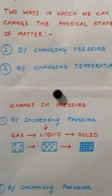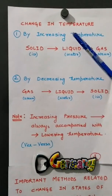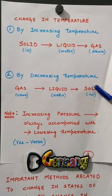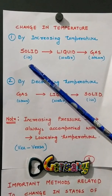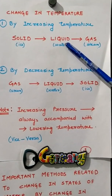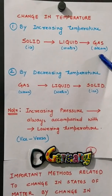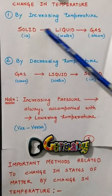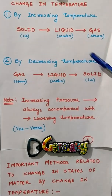The second way to change the physical state of matter is by change in temperature. By increasing the temperature — we can take the example of ice — ice in solid state is kept at normal room temperature and gets converted into liquid state. When water is boiled, that means temperature is increased, it gets converted into steam or gas. By decreasing the temperature, gas gets converted into liquid and liquid gets converted into solid.